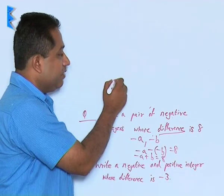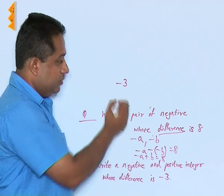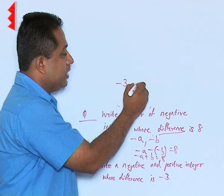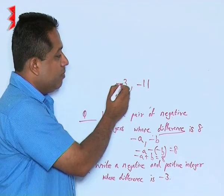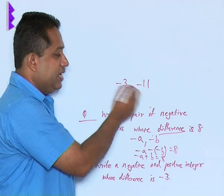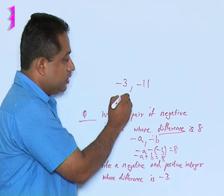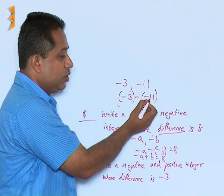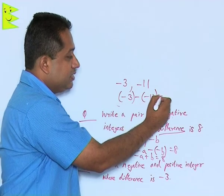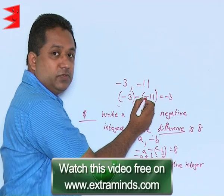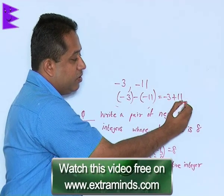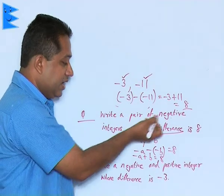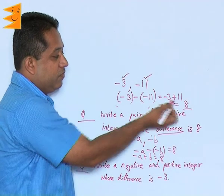Let us say the first negative number we choose is minus 3 — it could be any number. The second number should be chosen so that the difference is 8, so let us choose minus 11. Now, minus 3 and minus 11 are both negative integers. When we subtract them — minus 3 minus of minus 11 — the two negatives become plus, giving minus 3 plus 11, which equals 8. So the two numbers are minus 3 and minus 11, both negative integers, and their difference is positive 8.